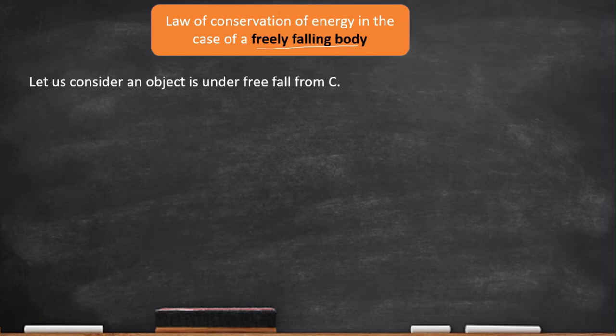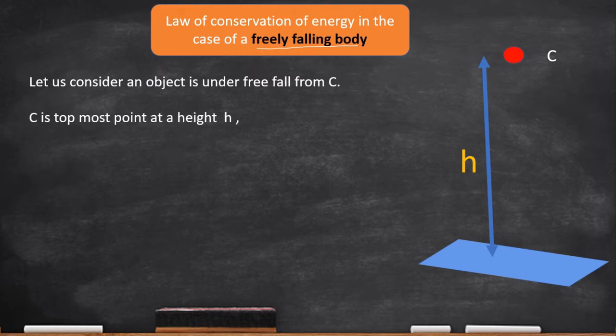Let us consider an object is under free fall from C. This C point is H units away from the ground, and the point we take on the ground is A.